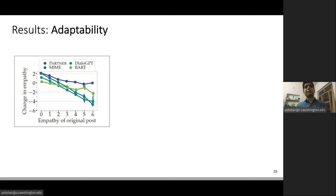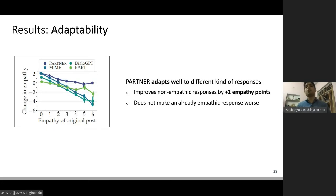Next, we analyze adaptability of different models. On online peer support platforms, you will find all sorts of responses. Some responses may need a lot more help with empathy, while others may not need any help at all. Through our analysis, we find that PARTNER adapts well to these different kinds of responses. It is able to improve non-empathic responses by more than two empathy points. And it's the only model which does not make an already empathic response worse.